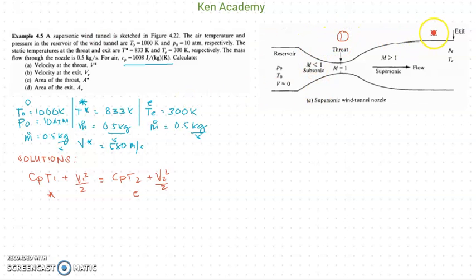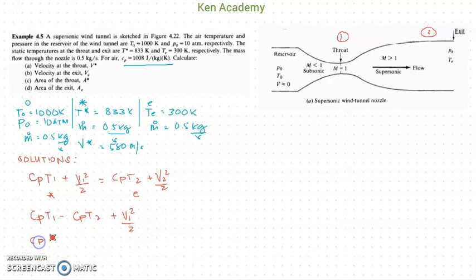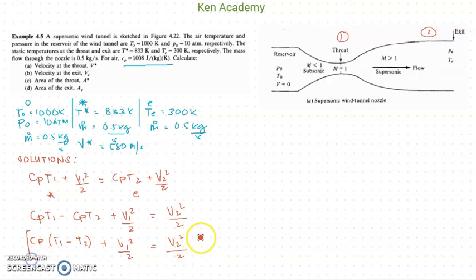State 1 is the throat and state 2 is the exit. Let me rearrange the equation by transferring cp·T2 to the left side and grouping like terms. We get: cp(T1 − T2) + V1²/2 on the left side.